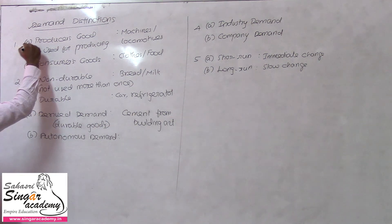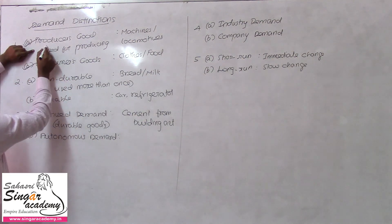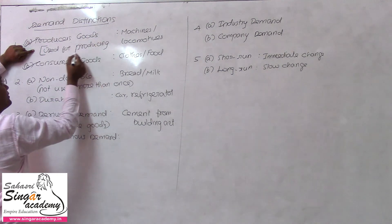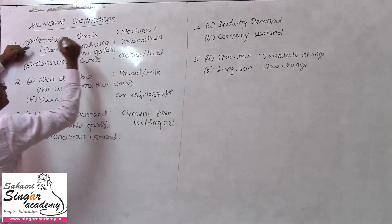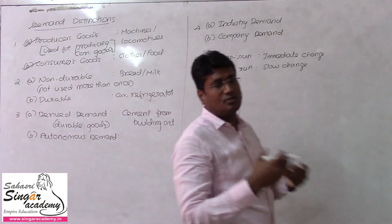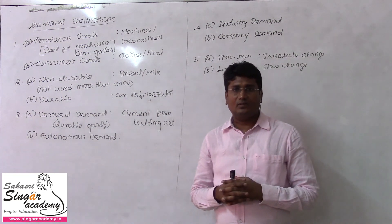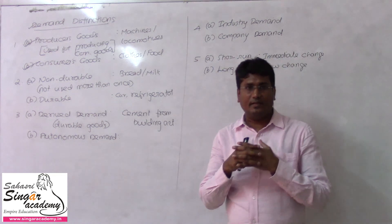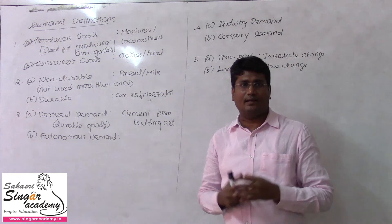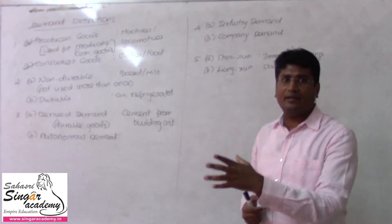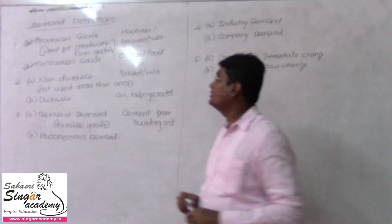First block: Producer Goods and Consumer Goods — you can classify them. Producer Goods are goods used for producing consumer goods. For example, in the cement industry, a big plant is installed. That plant is the Producer Good, and the cement it produces is the Consumer Good.